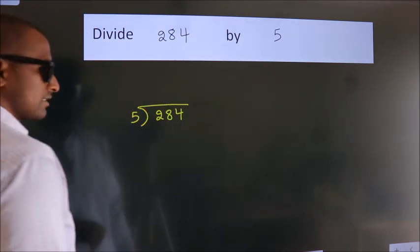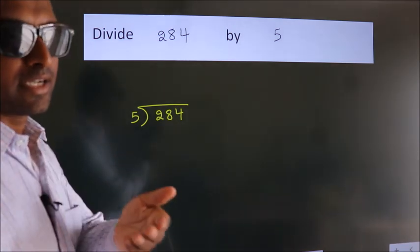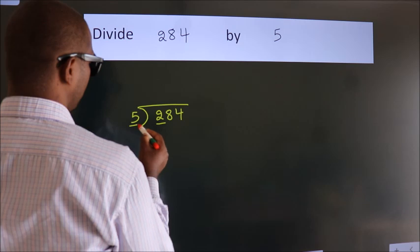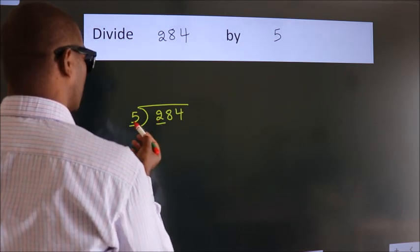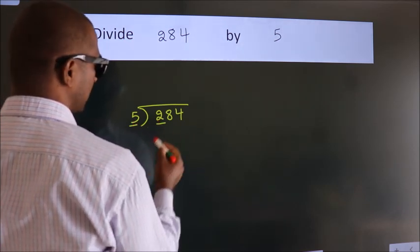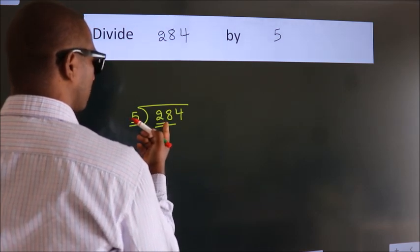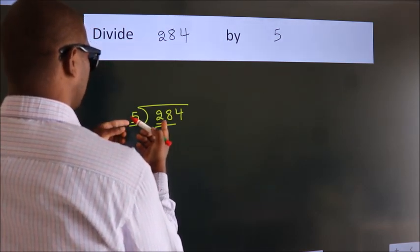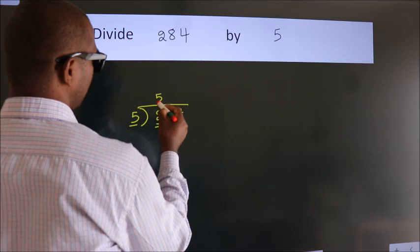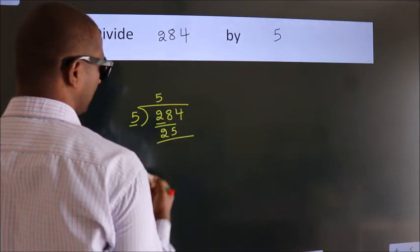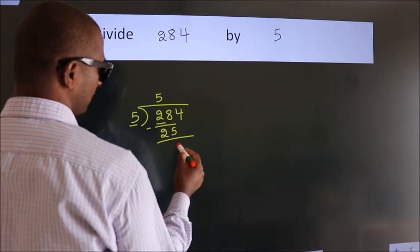This is your step 1. Next, here we have 2, here 5. 2 is smaller than 5, so we should take 2 numbers, 28. A number close to 28 in the 5 table is 5 fives, 25. Now we should subtract. We get 3.